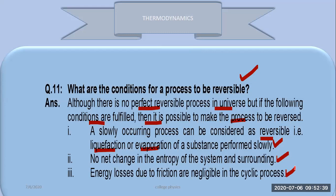To recap: what are the conditions for a process to be reversible? Although there is no perfectly reversible process, if we follow these three steps, we can ensure a reversible process can occur: slow operating processes like liquefaction or evaporation, no net change in entropy of system and surrounding, and energy loss due to friction negligible in a cyclic process.